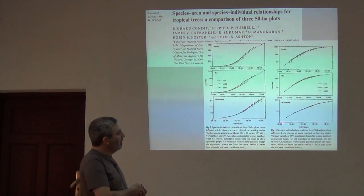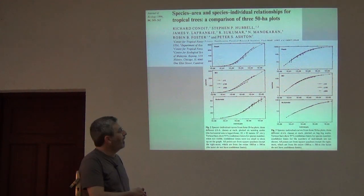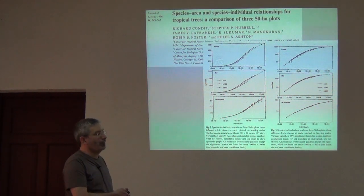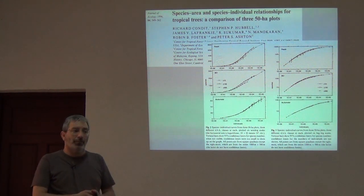Which is to say, here you're looking at one individual, 10, 100, 1000, 10,000. And here you're finding one species, 10 species, and 100 species.